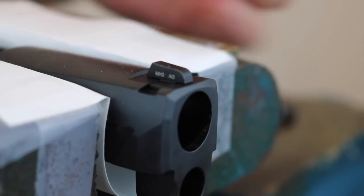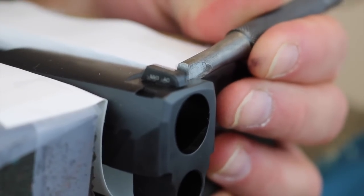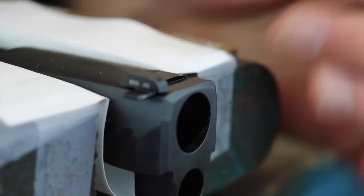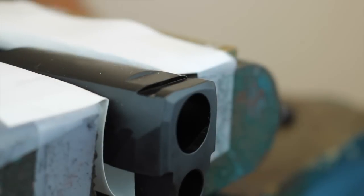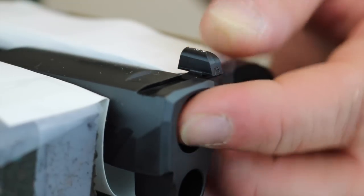We're going to begin by removing the front sight from the slide. With the factory front sight removed, we can now begin by checking the fitment of the replacement front.